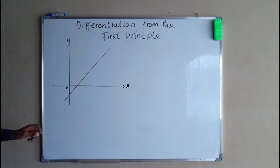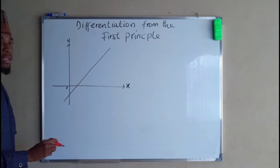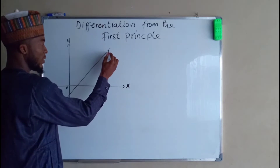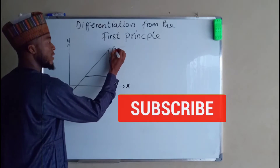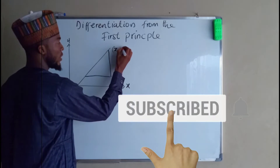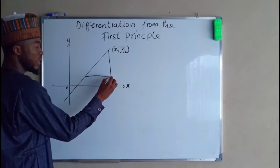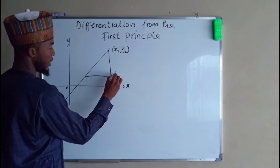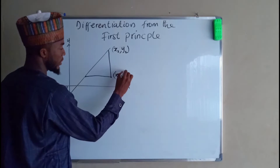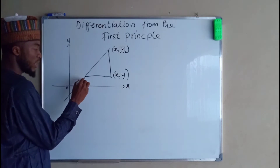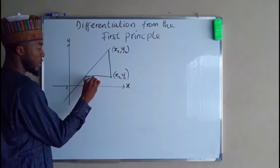Suppose we have a straight line graph along the x and y axis. If this is our slope, this coordinate here is x, y2. While this coordinate here is x2, y1. While the coordinate here is x1 and y1.